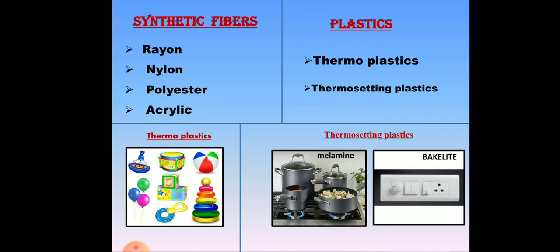Melamine is a kind of plastic which is used in the handles of kitchen utensils. Bakelite is also a kind of plastic which is used in switchboards. Since melamine is a poor conductor of heat, it is used in kitchen utensils. And since bakelite is a poor conductor of electricity, it is used in electrical switchboards.